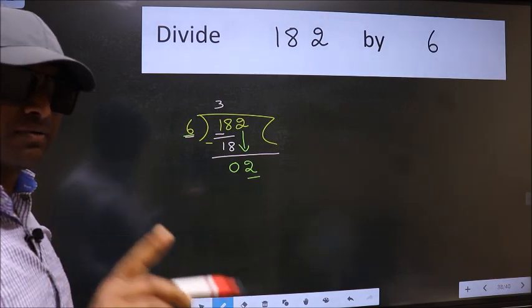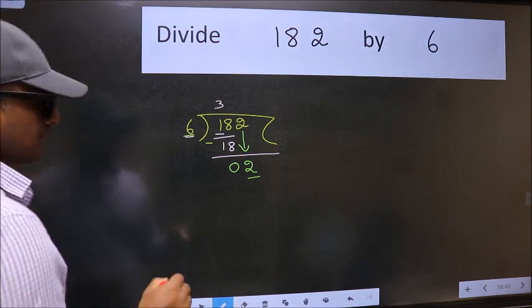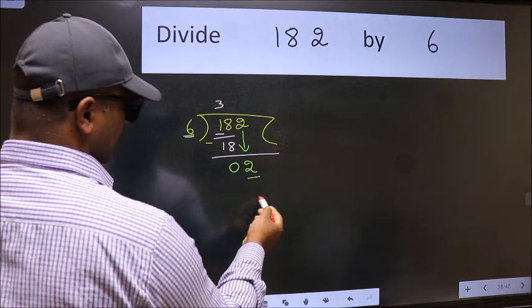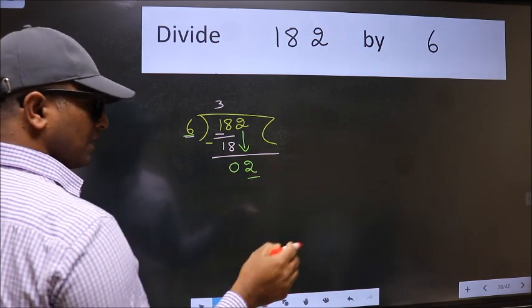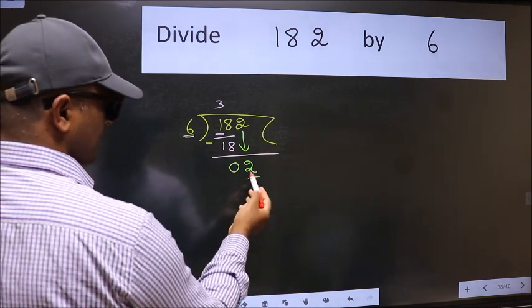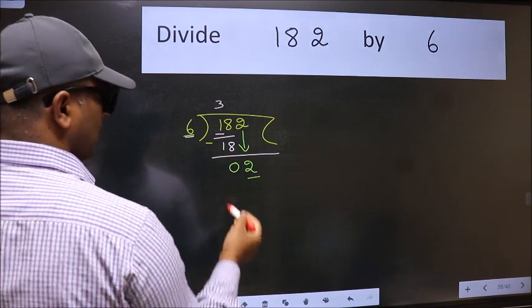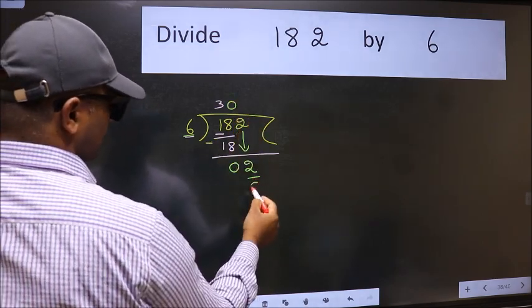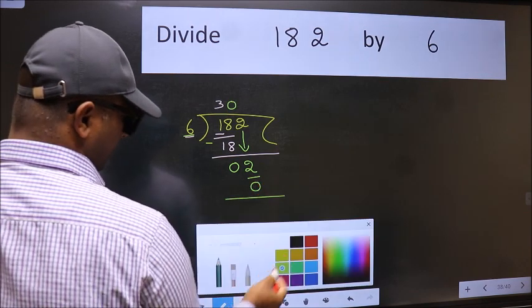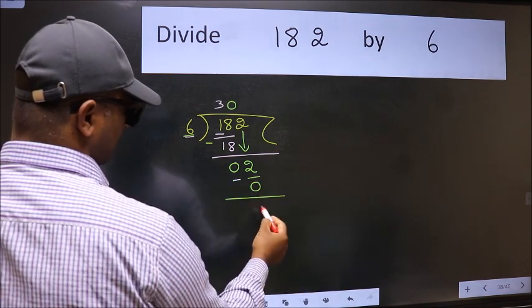Instead of that, what you should think is: which number should we take here? If I take 1, we will get 6, but 6 is larger than 2. So what we do is take 0. So 6 into 0 is 0. Now we subtract. We get 2.